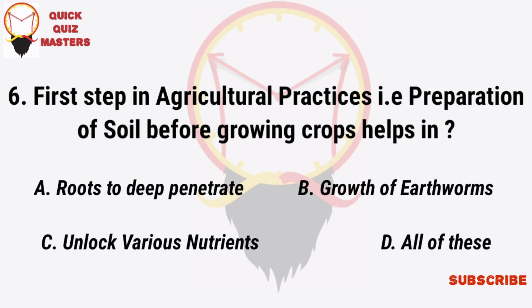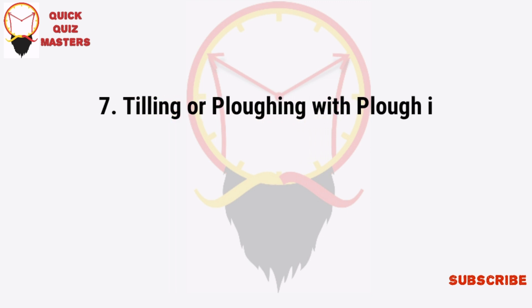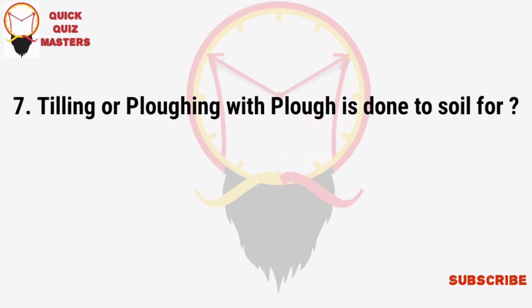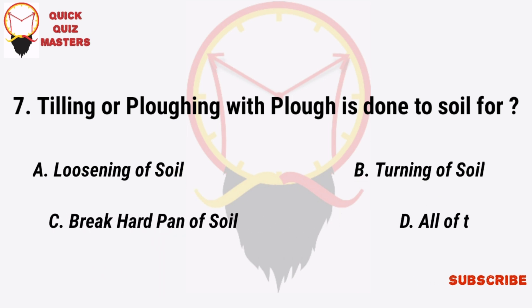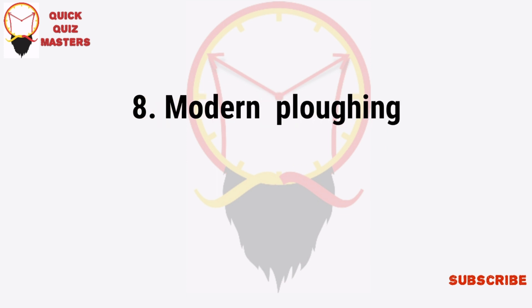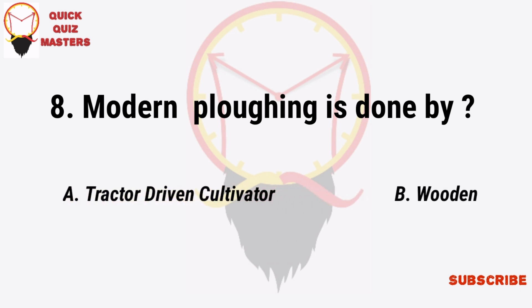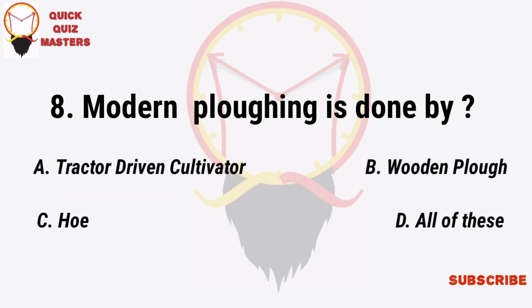Soil preparation unlocks various nutrients — all of these. Tilling or plowing with a plow is done to soil for loosening of soil, turning of soil, breaking hardpan of soil — all of these. Modern plowing is done by tractor-driven cultivator, wooden plow, or other methods — all of these.